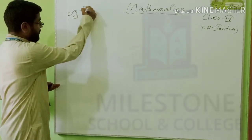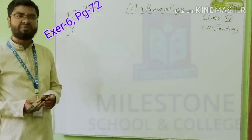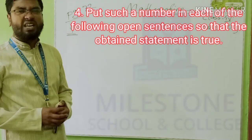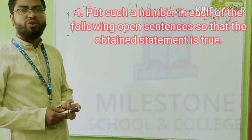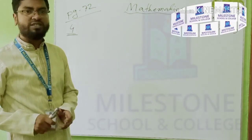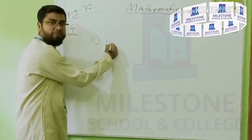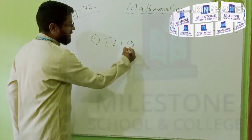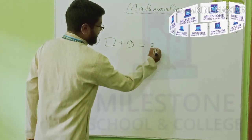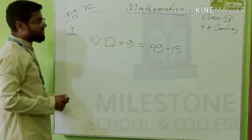This is number 72. All of you, I am requesting you to open. And we will solve number 4. What is the question 4? Put such a number into the box that the following statement will be true. So the first one: what will blank plus 9 equal? After that, there is 49 minus 15. This is our statement.